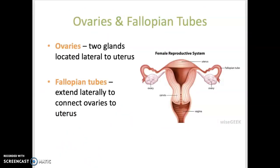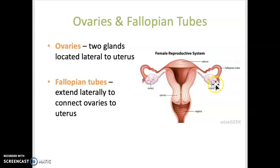The ovaries are oval or almond-shaped glands on either side of the uterus, and these ovaries contain many follicles. The follicles contain the ova or the eggs. Ovulation is when one single ovum is released from an ovary, and fertilization can occur at this point if there are sperm present in the reproductive tract. Usually fertilization happens somewhere along the fallopian tube. If no sperm are present, the ovum will eventually be excreted from the body.